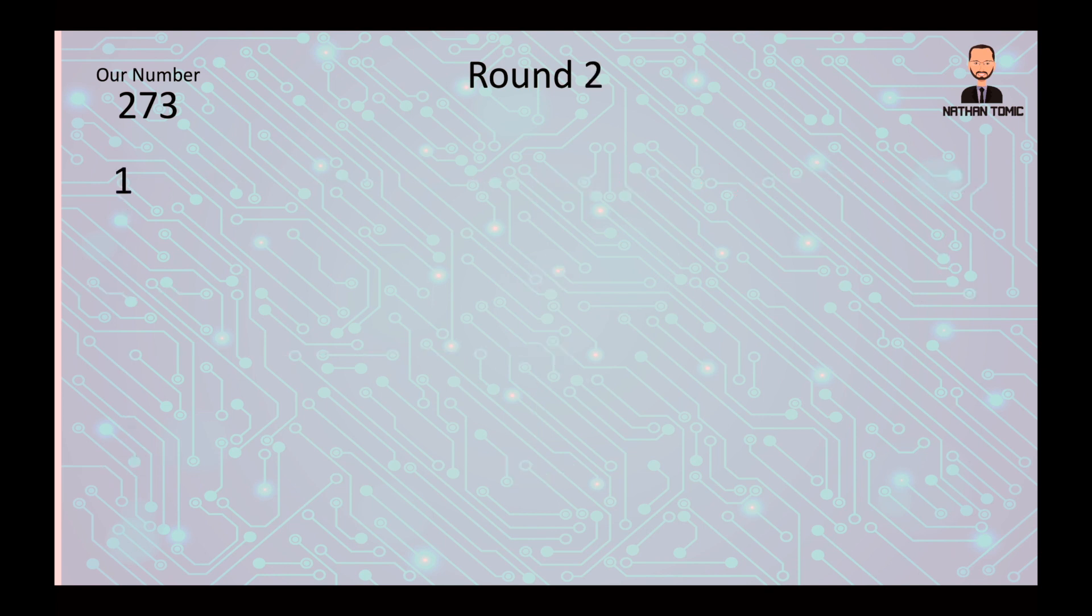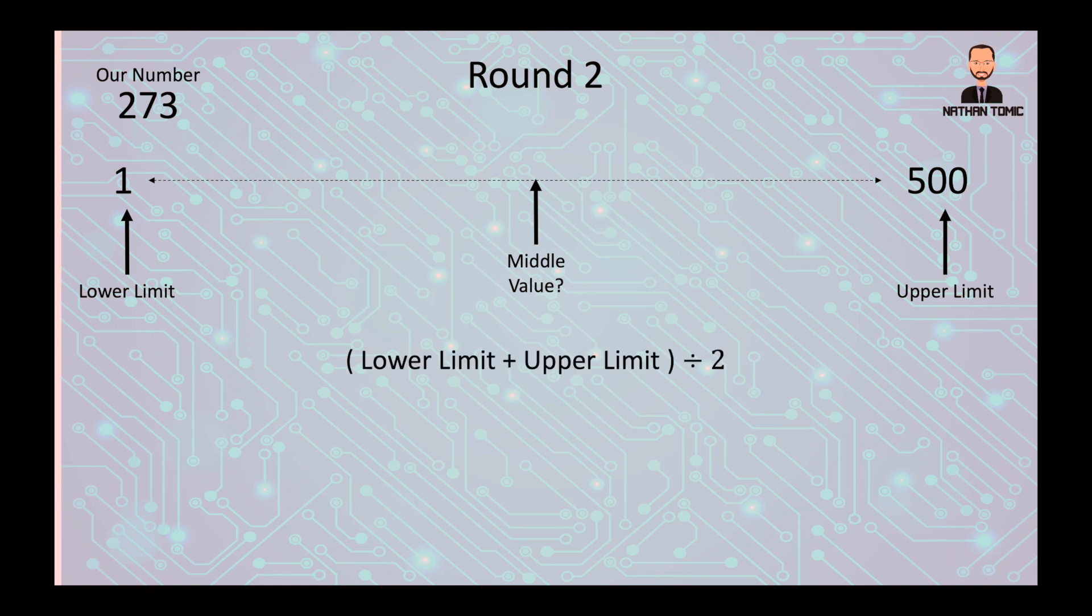Round two: 1 as our lower limit, 500 as our upper limit, and everything in between. What's our middle value? Let's do the math again. Lower limit plus upper limit divided by 2. The math seems straightforward. Again we've got a decimal, so we'll round down to the nearest whole number, which means we're looking for 250. We ask ourselves again, is our number 273 greater than 250?